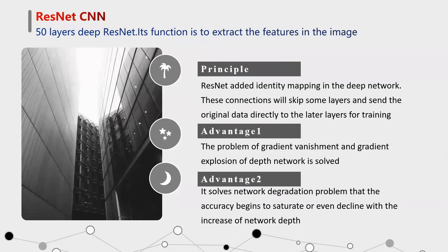Now, it is the ResNet-CNN part. It has a feature layer of deep ResNet, whose function is to extract features from the image. The reason I chose this CNN architecture is that the traditional convolutional network or the fully-connected network will have some problems, such as information loss when the features are transmitted. At the same time, it will cause the gradient to vanish or the gradient to explode, which makes the deep network unable to train. ResNet solves this problem to a certain extent by bypassing the input information directly to the output to protect the integrity of the information. The whole network only needs to learn the difference between the input and output to simplify the learning objectives and difficulty.